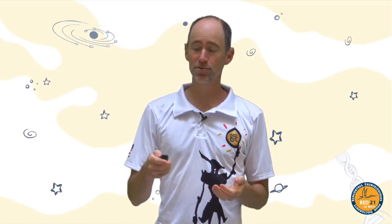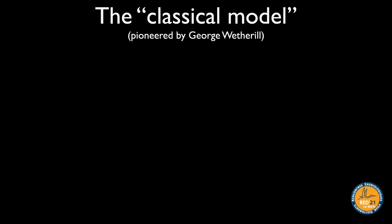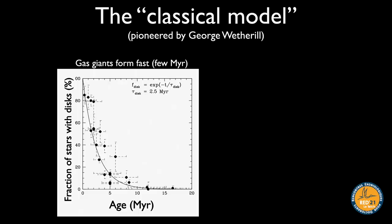The classical model was pioneered by George Wetherill starting in the 1970s and was still being worked on until recently. It makes a key assumption: since gas disks around other stars only last a few million years, Jupiter and Saturn probably formed fast — within a few million years — whereas Hf-W isotopes show Earth's growth finished 50–100 million years later. The final stages of Earth's growth were therefore affected by gravitational perturbations from the already-formed gas giants.